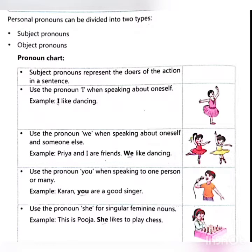Personal pronouns can be divided into two types: subject pronouns and object pronouns.